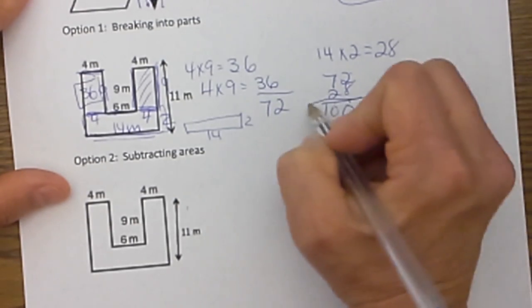So let's take 72 and add another 28 and that's going to give us 100 square meters for our area. That's the way to break it into sections.